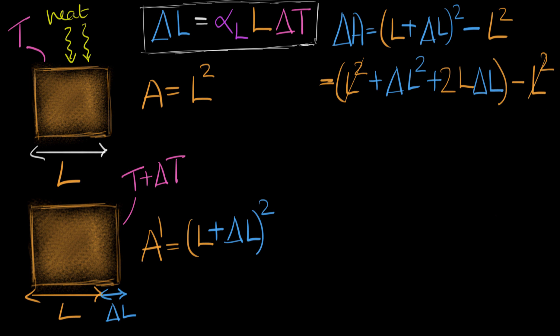And so we end up with 2L delta L plus delta L whole squared. That is our change in area. And at this point, we may say, okay, there's nothing more to do, right?